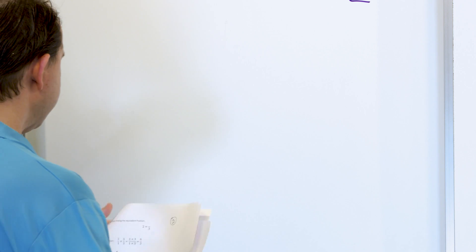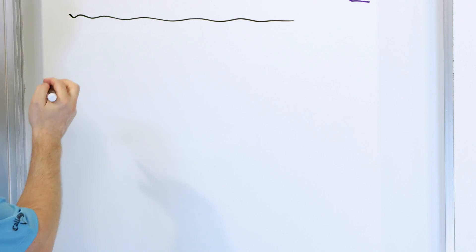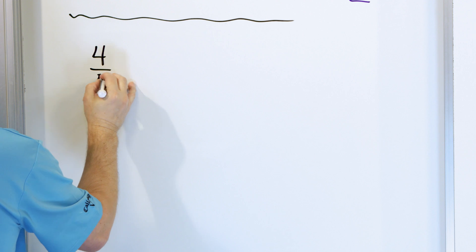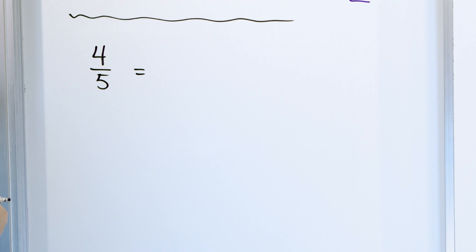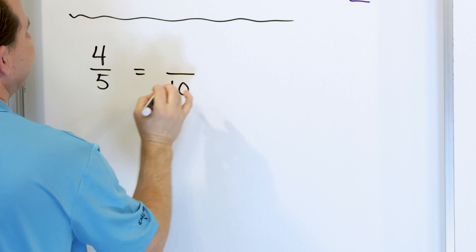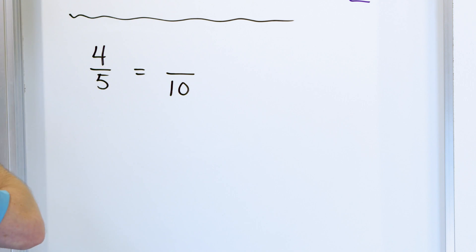All right. It's going to become, I think, a lot easier as we jump into a bunch more problems. I think I want to do this problem next. So the next problem is, let's say we have the fraction 4/5, and we're going to say that we are going to find an equivalent fraction to that that has a 10 in the denominator. What do we have to figure out the answer is to the numerator?